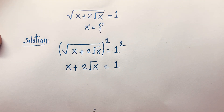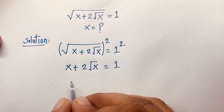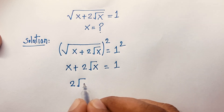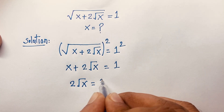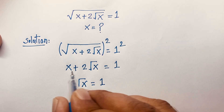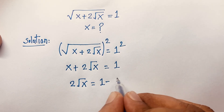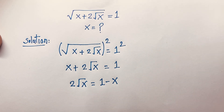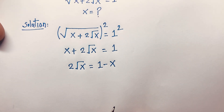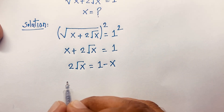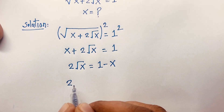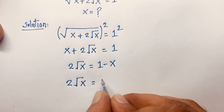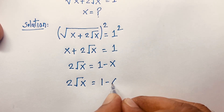Now at this moment, you can easily see that 2 square root x is equal to 1 minus x. I just move this positive x to this side, so it will be negative x. So we have 2 square root x is equal to 1 minus x.